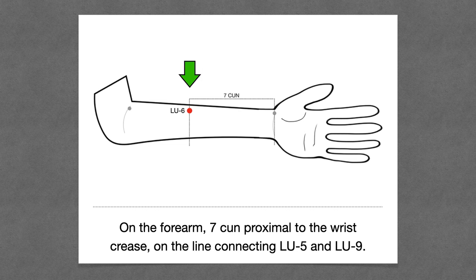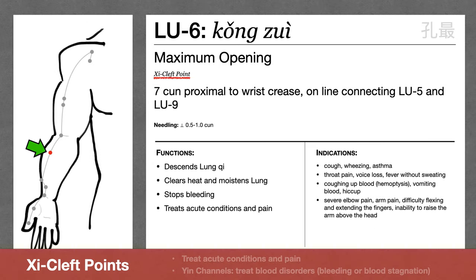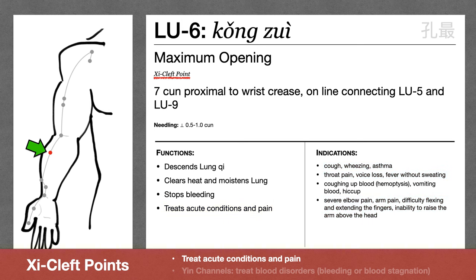Lung 6 is on the forearm, 7 cun proximal to the wrist crease, and is a Xi cleft point. Xi cleft points treat acute conditions and pain. Here we see acute conditions like throat pain, loss of voice, or fever without sweating — usually due to wind heat or wind dryness — as well as pain along the channel such as elbow pain, arm pain, difficulty flexing and extending the fingers, and inability to raise the arm. In modern practice, Lung 6 is principally used for acute asthma attack. Xi cleft points on the yin channels also have an additional action of regulating the blood or treating disorders of the blood, so Lung 6 also stops bleeding for things like coughing up blood and vomiting blood.